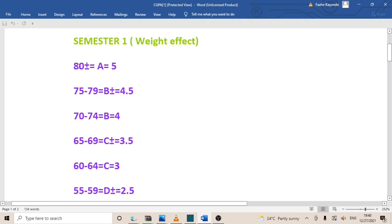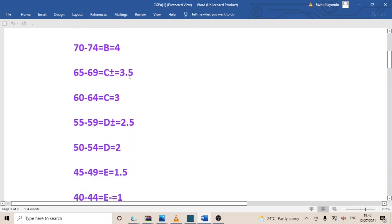Before I go into the weight effect, I'm going to give you an intro of different grades and what they mean. If you're having 80 plus, that's an A which is equal to 5. 75 to 79 is equal to B plus, which is 4.5. Then 70 to 74 is a B which is equal to 4. 65 to 69 is a C plus which is equal to 3.5.